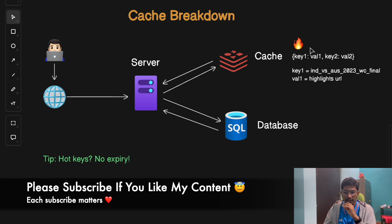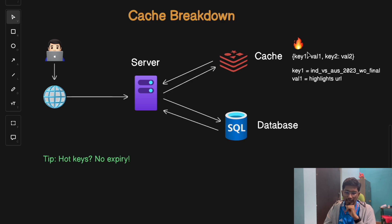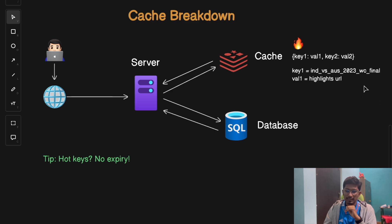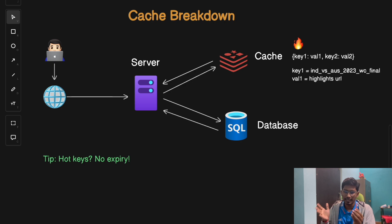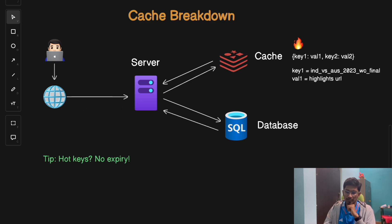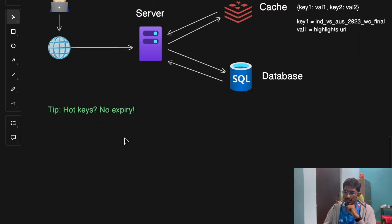When a hotkey expires, everyone rushes to the database to get that data, creating a massive spike in database traffic. Since it's a very high-demand item, all requests flood the database at once. To prevent this, the key solution is to never let your hotkeys expire — do not set any expiry time for them. Instead, manage them manually or write a custom refresh strategy.